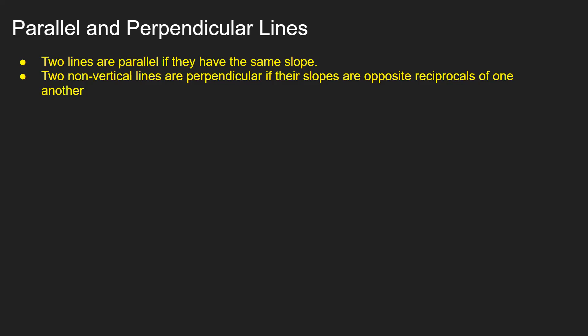The reason we say non-vertical is because a horizontal line has slope zero, and the line perpendicular to that would be vertical, which has no slope. The reciprocal of zero is undefined, so that's a special case.